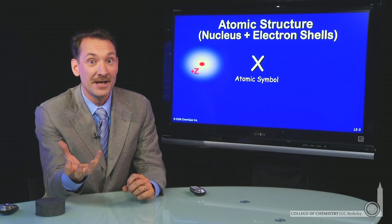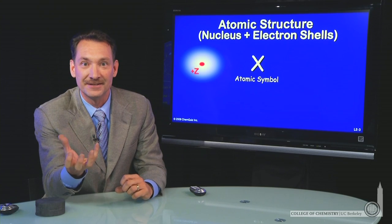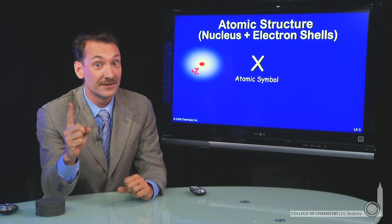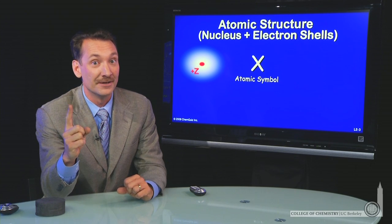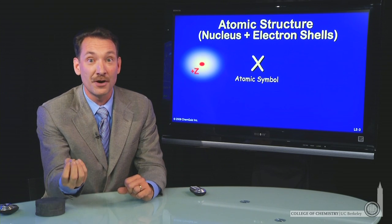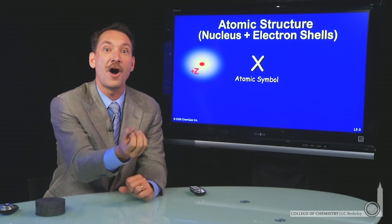You can have carbon that has different masses. It's just the protons that determine the element carbon, but with different numbers of neutrons, you'll have different masses, all of them carbon.